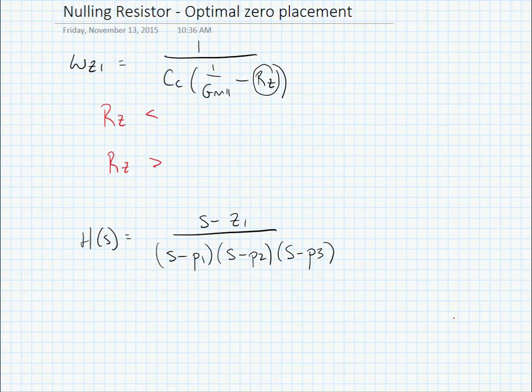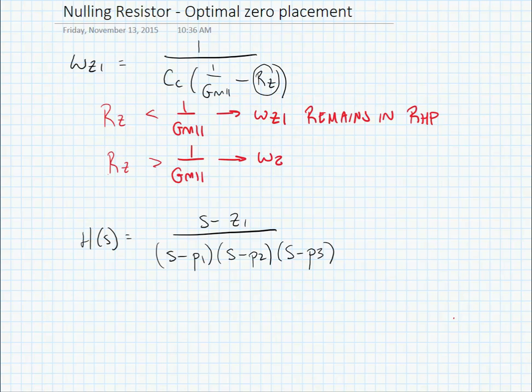If Rz is less than 1 over gm2, then omega z1 remains in the right half plane. We can control the frequency of the zero, so this isn't necessarily a problem, but we also have some advantage if we move it to the left half plane. If Rz is greater than 1 over gm2, then omega z1 moves to the left half plane.